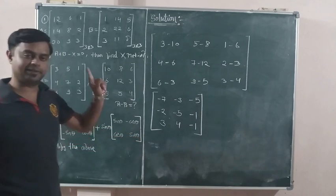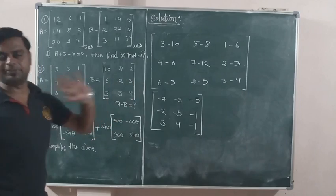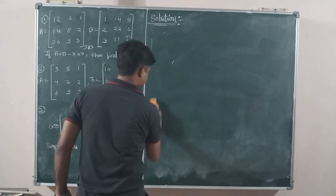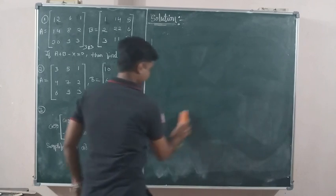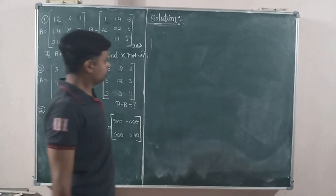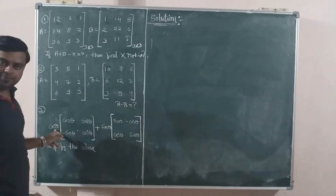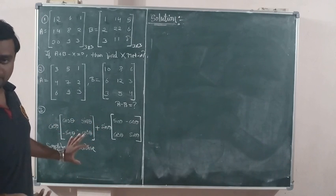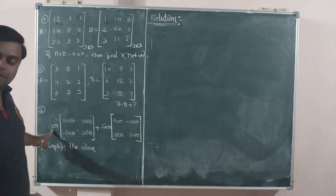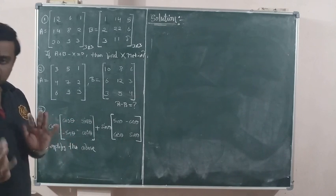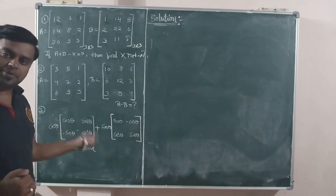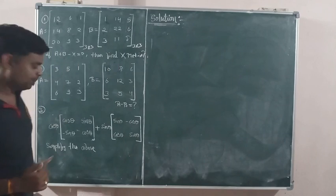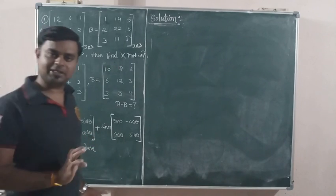Now in problem three we have sin theta and cos theta matrices and we need to simplify the given expression. First, we will multiply cos theta with this matrix. Cos theta is multiplied by all elements of the matrix. If it is a 3 by 3 matrix, there are 9 elements — cos theta multiplies all 9. If it is a 2 by 2 matrix, cos theta multiplies all 4 elements. If it is a 4 by 4 matrix, cos theta multiplies all 16 elements.